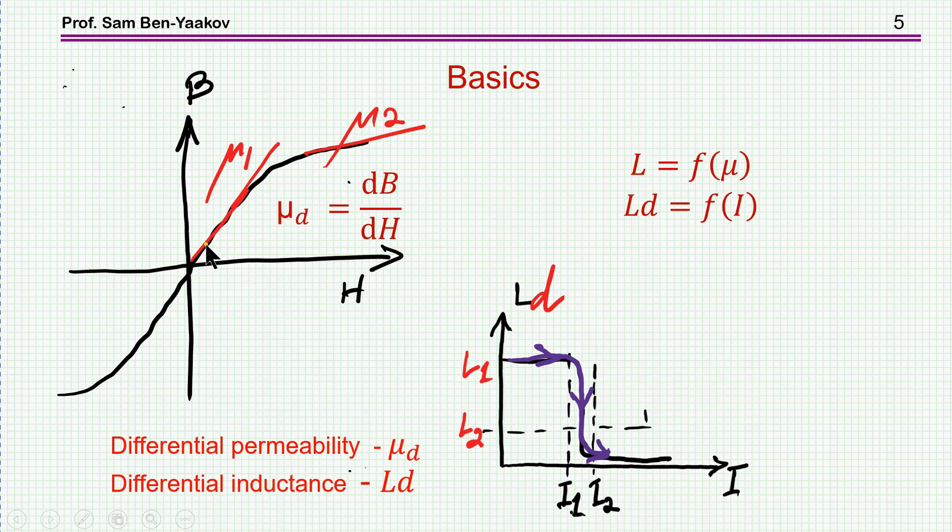So, first of all, we have to recognize that the inductance we are talking about is the local or derivative inductance, because the local or derivative permeability is changing. Therefore, the inductance we are talking about is the inductance related to the derivative permeability. Now, this inductance is a function of current, because as the current is changing, then the local or derivative inductance is changing. So, what we see here is just a specific definition of inductance, the differential permeability generating a differential or local inductance.